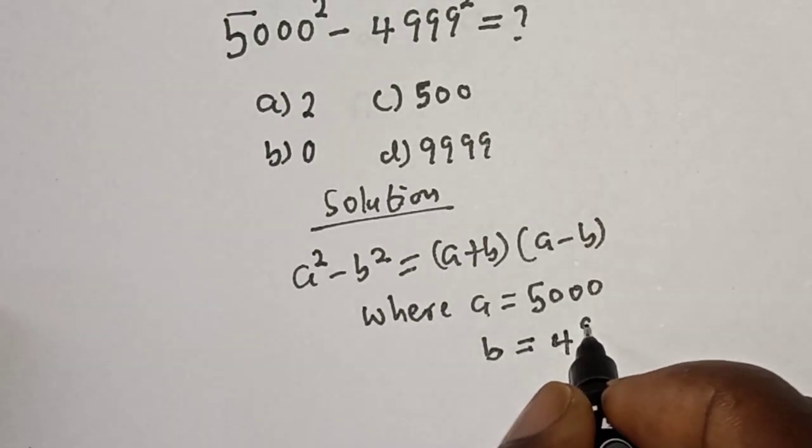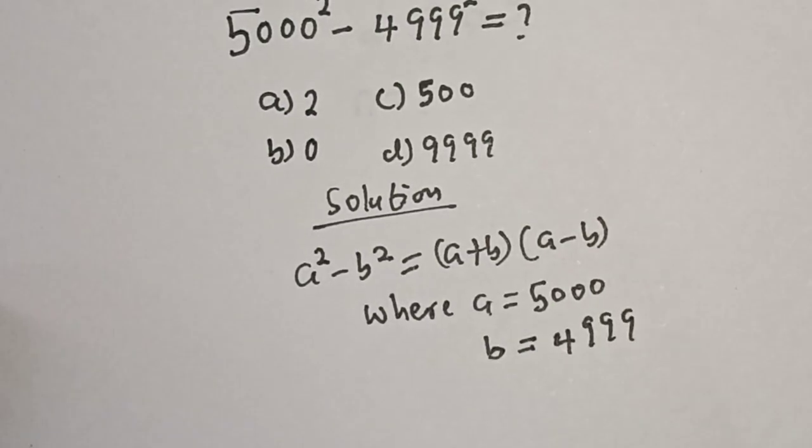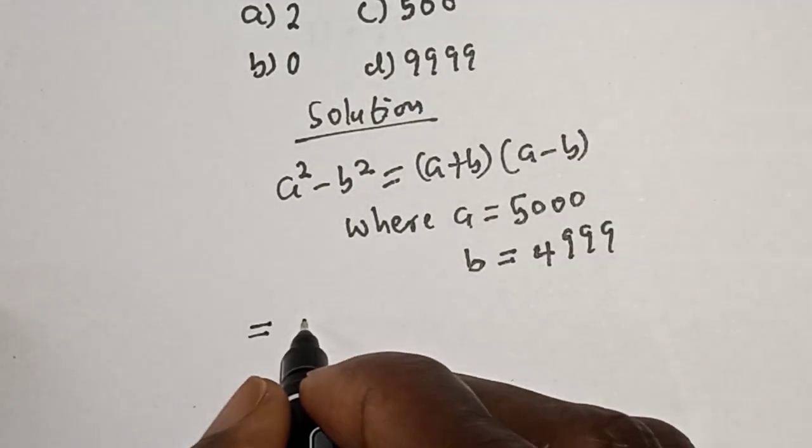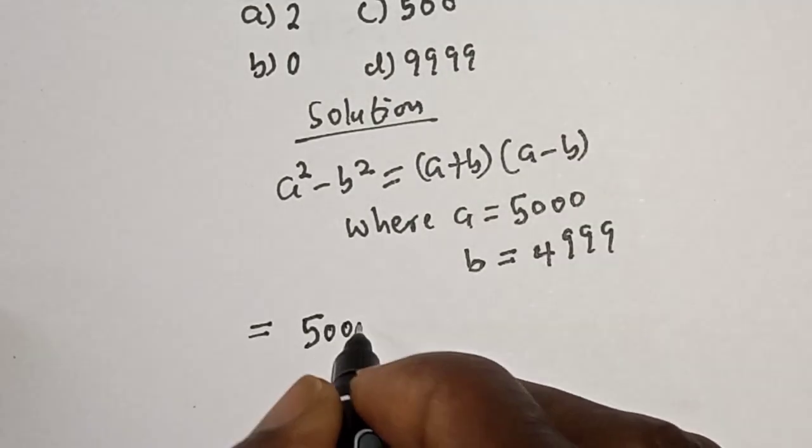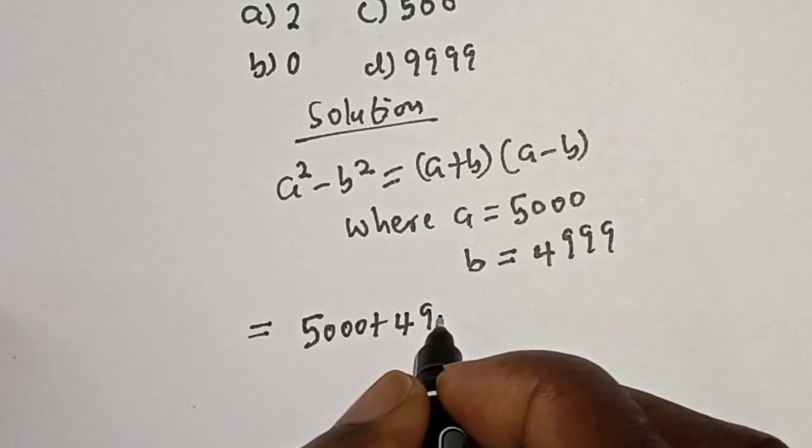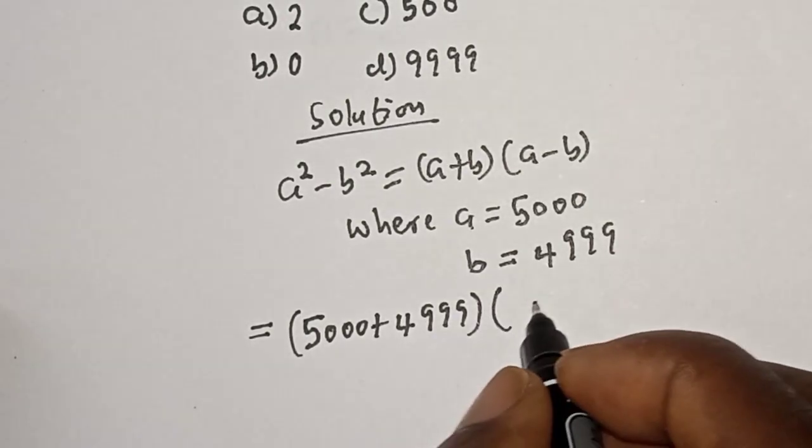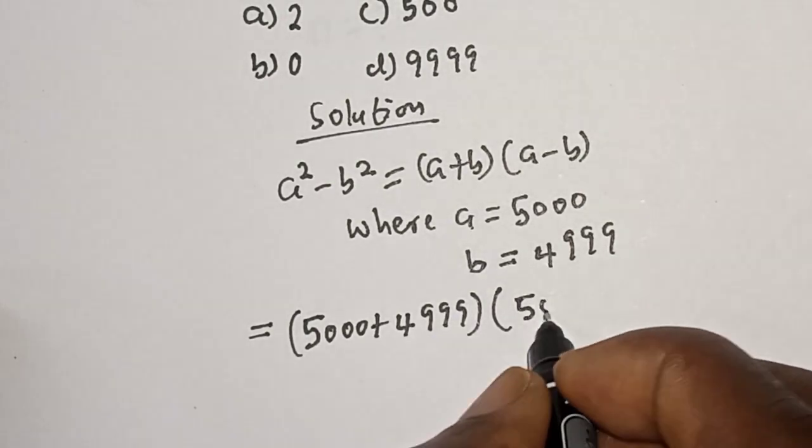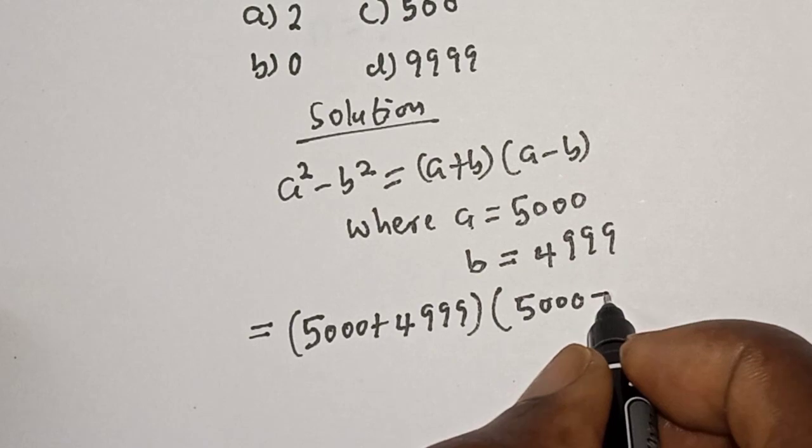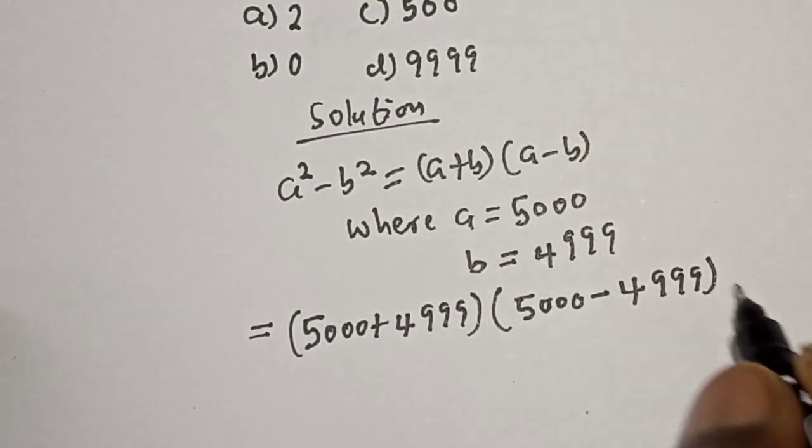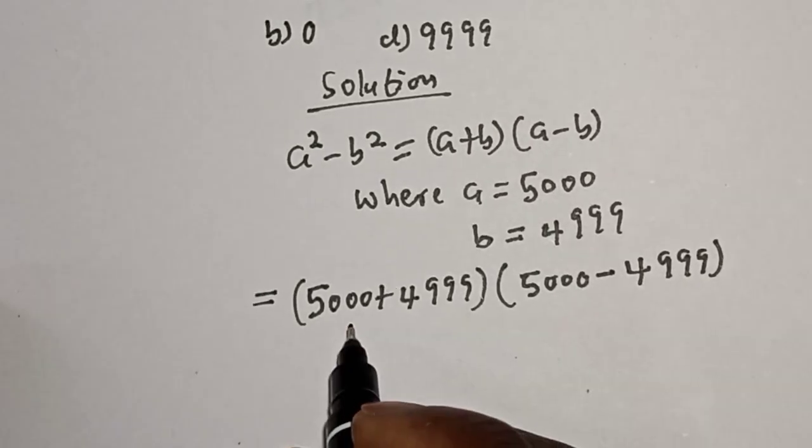Now let's substitute. This is equal to 5000 plus 4999 multiplied by 5000 minus 4999.